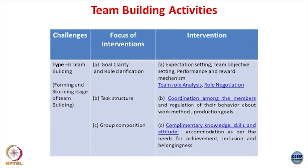The storming stage is when the group or team starts working towards finalizing the final norms and objectives. The storming phase is when there are extensive debates about what to pursue and how to pursue. In this type of problem, the focus of intervention is generally goal and role clarification related to task structure. There are simple interventions like expectation setting, team objective setting, and performance and reward mechanism — these are simple but very important interventions.